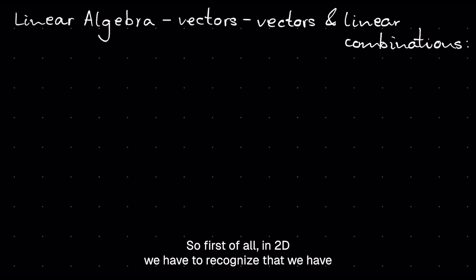First of all, in 2D, we have to recognize that we have two fundamental operations for vectors. We have addition, and we have scalar multiplication. Combining these two operations give us a linear combination.